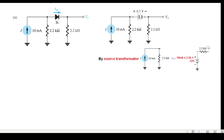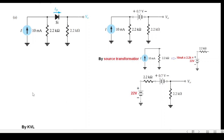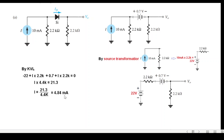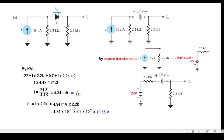With the new transformed circuit, applying KVL: minus 22 plus IE×2.2k plus 0.7 plus IE×2.2k = 0. Solving gives IE = 4.84 milliamperes, which is the diode current IAD. Output voltage equals current multiplied by 2.2kΩ, giving output voltage V0 = 10.65V.